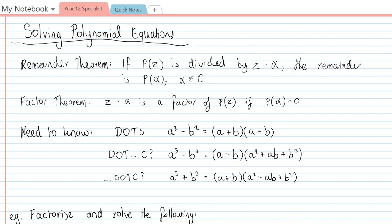The remainder theorem is that if we divide some polynomial P(z) by z minus some complex number, we'll call it alpha, then the remainder is given by P(alpha). So we can substitute that value of alpha into the equation and that will tell us what the remainder is going to be.